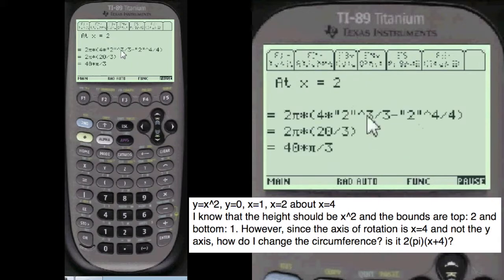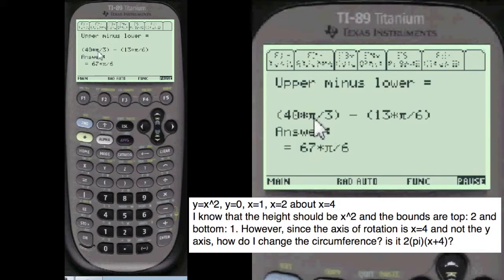At x equals 2, equals 40 pi over 3. At x equals 1, it's 13 pi over 6. Upper minus lower equals 67 pi over 6. The answer. Have a good one.